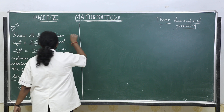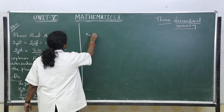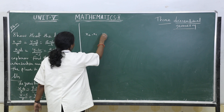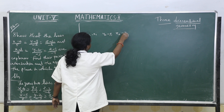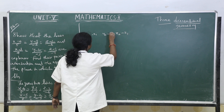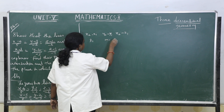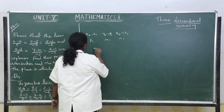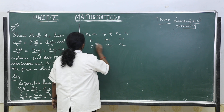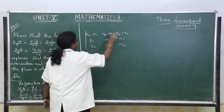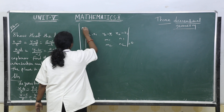To prove the lines are coplanar, the formula is the determinant with first row (x2−x1, y2−y1, z2−z1), second row (l1, m1, n1), third row (l2, m2, n2) equal to 0.